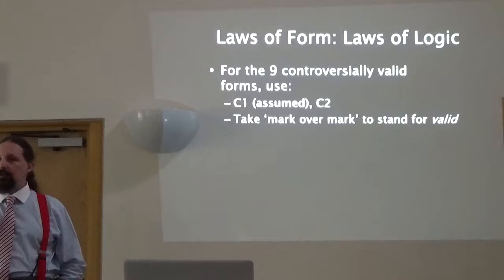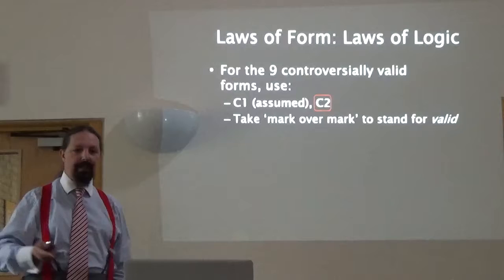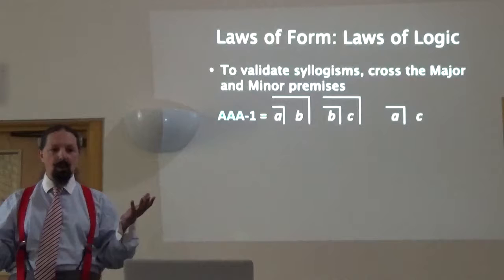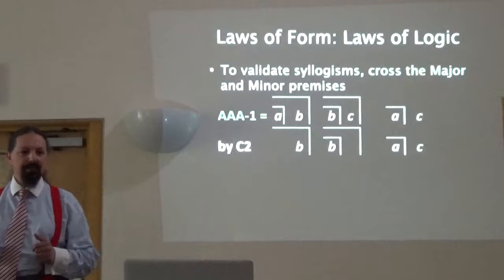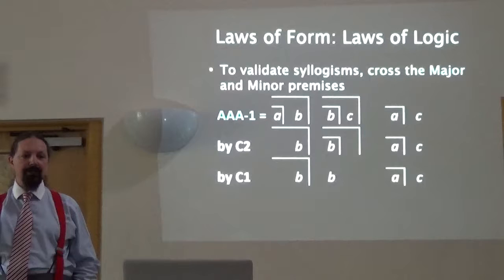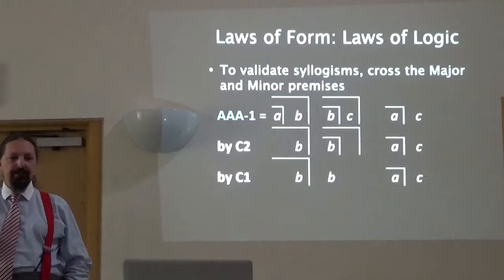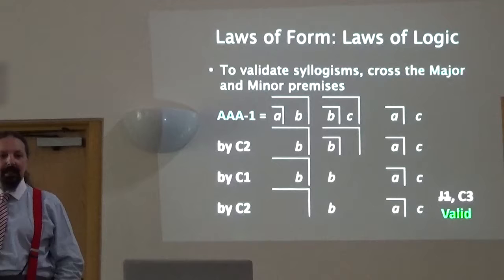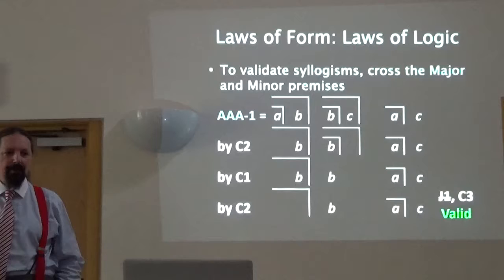For the nine controversially valid forms, you just use C2 and take mark over mark to stand for valid. Let's look at the 15 uncontroversially valid forms first. AA1 is an example. We've crossed the major and minor premises, we apply C2. Can we take A with a cross over it out? Yes. Can we take C out? Yes. What does that leave? The possibility to take out the mark over mark. That reduces to an expression where we can take B out from inside the mark, leaving an empty cross. We can ignore anything else outside it, and we know the syllogism is valid.